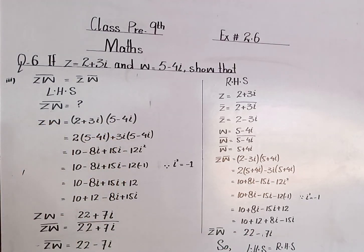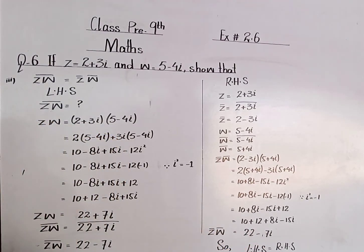So conjugate of z multiplied by conjugate of w is 22 minus 7 iota. Now you can see left hand side and right hand side are both the same. Thank you.